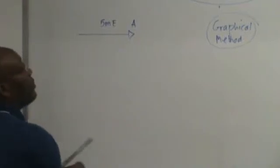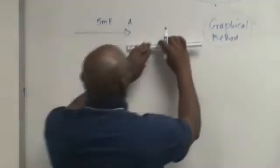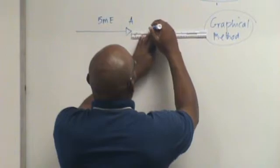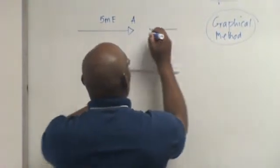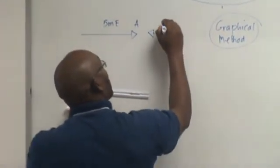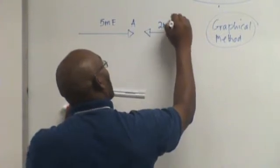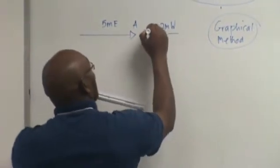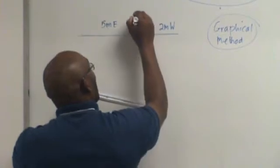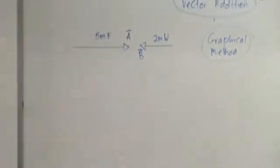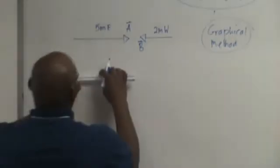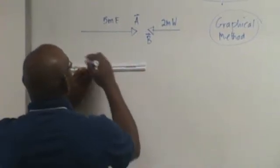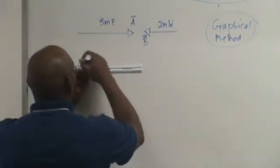Let's do another one. Instead of having B pointing to the east, let's point it to the west, 2 meters west. And that's vector B. Once again, tail to tip.